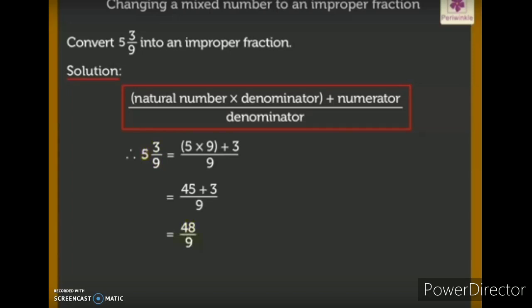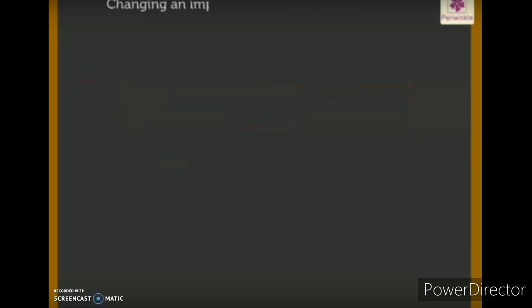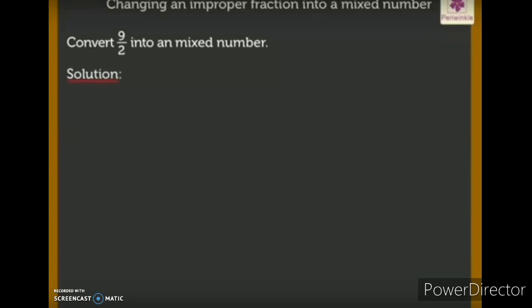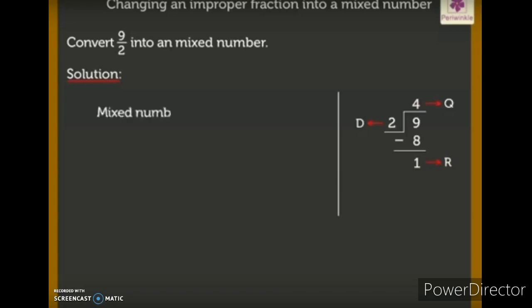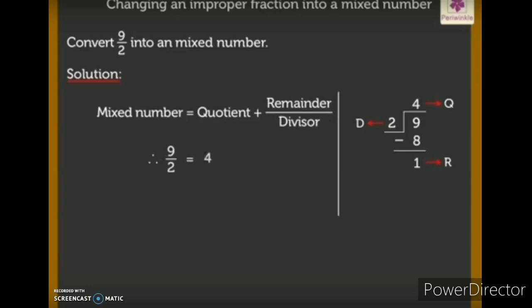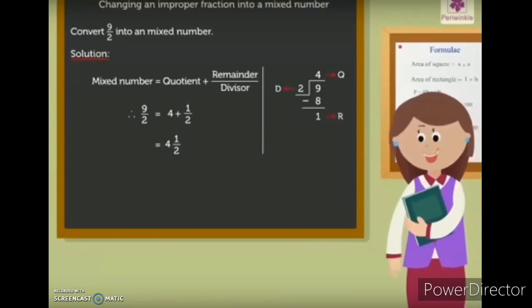Next, let's change an improper fraction into a mixed number. Here we have 9 by 2. We divide 9 by 2, which gives a quotient of 4 and a remainder of 1. The formula is: quotient whole remainder by divisor. So we get 4 whole 1 by 2.